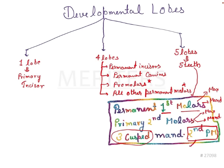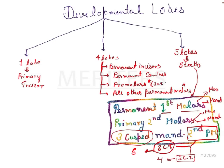Mandibular second premolars are of two types — the three-cusp type and the two-cusp type. The three-cusp type arises from five lobes, while the two-cusp type arises from four lobes. That's why I made the star mark earlier — all premolars arise from four lobes except the three-cusp type mandibular second premolar. If it is the two-cusp type mandibular second premolar, that also arises from four lobes.